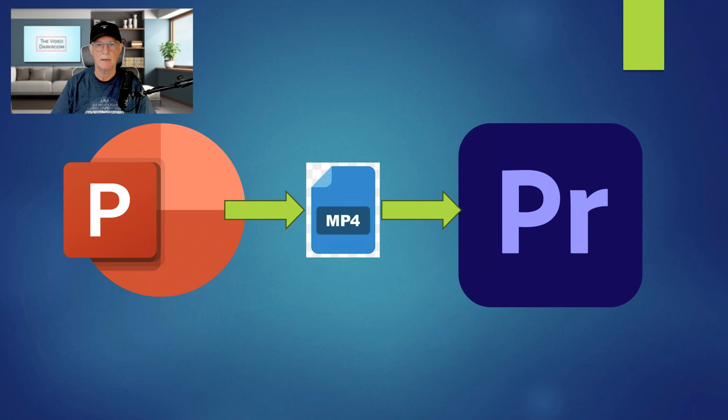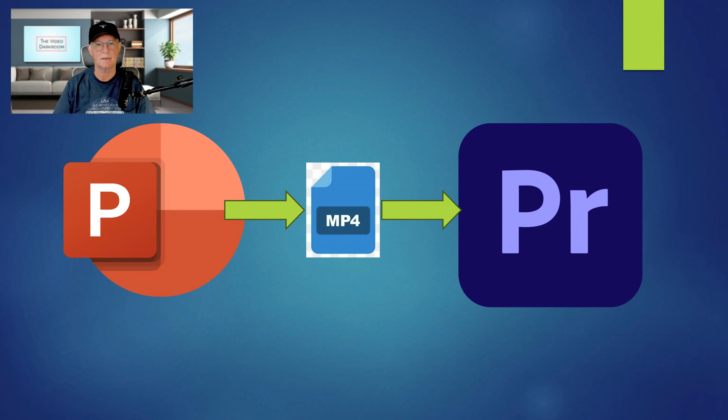The second method is to use MP4 video as the intermediate file. PowerPoint allows you to export your presentation to an MP4 video. There may be a little bit of organization required to get the video to play correctly, so this method is a little more complicated, but it has the advantage of including the builds and animations on individual slides. If you really need builds, I recommend the second method via MP4 video.